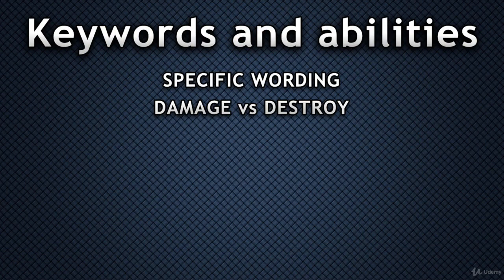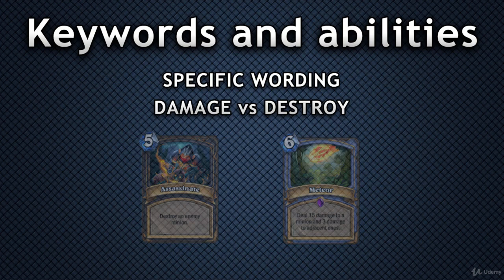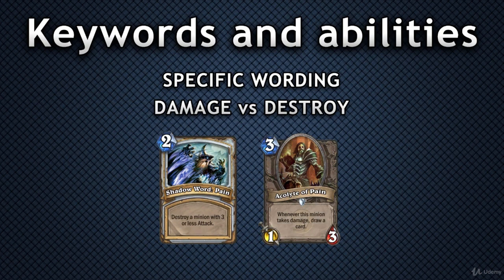For the sake of consistency and clarity, Hearthstone tends to use very literal language when describing mechanics and interactions. It tries to leave as little room for interpretation as possible. There are occasional irregularities, but for the most part all text on cards is very deliberate. An example of that would be the difference between damaging and destroying a minion. Destroying a minion can be done with a card or effect that specifically uses the word 'destroy' on it, such as Deadly Shot or Shadow Word: Pain.